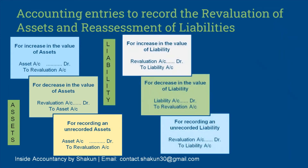For liabilities: since liabilities always have a credit balance, for an increase in the value of a liability, the liability account is credited and it is transferred to the revaluation account. For a decrease in the value of a liability, since liabilities have a credit balance, any decrease will be debited — so liability account DR to revaluation account. Any unrecorded liability means there is an increase in liability, so liability account is credited and revaluation account is debited.